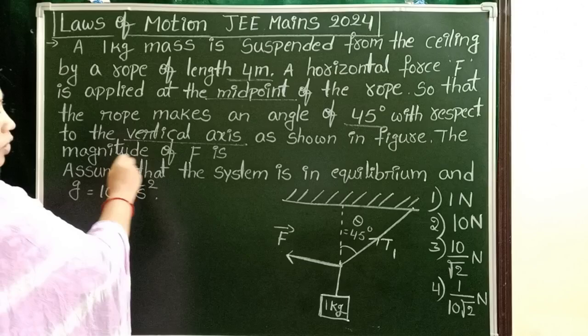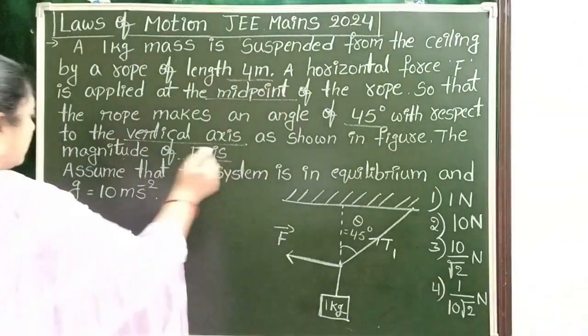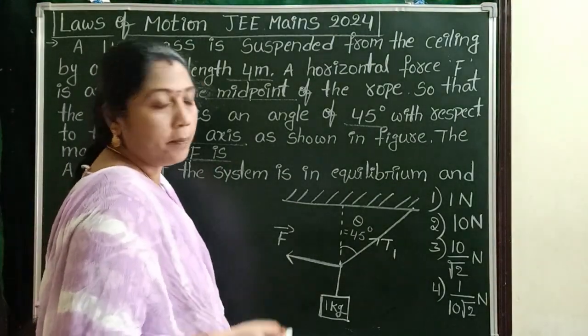The magnitude of F is what we need to find. Assume that the system is in equilibrium position.